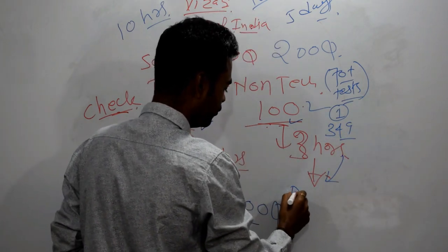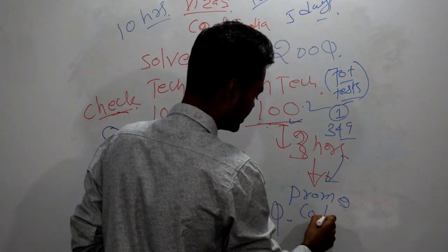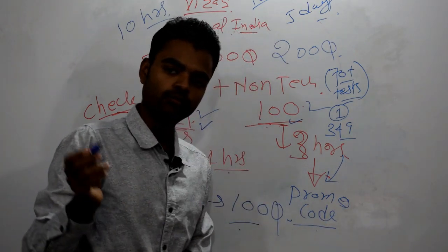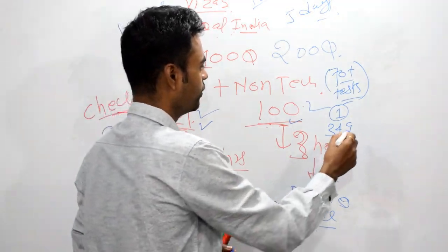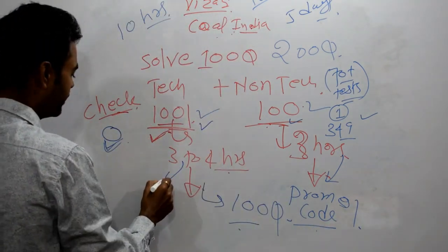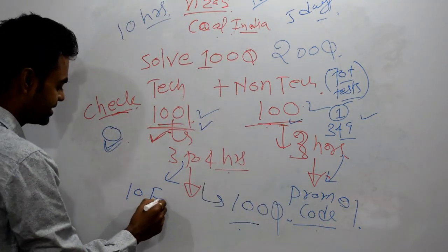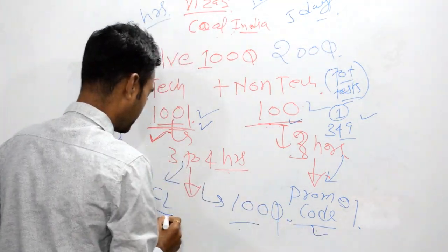It's only 349 rupees. I am providing you promo code for discount. Use that promo code. The promo code is in the description. Link also is in the description. For paper 1 test series, you will get discount. Also, for paper 2, we are providing 10 full-length test series, 100 questions each.